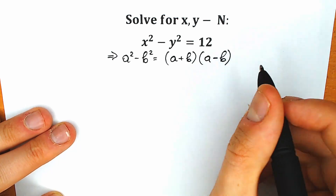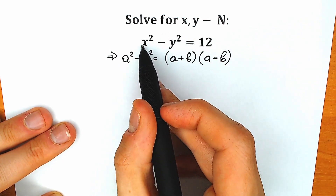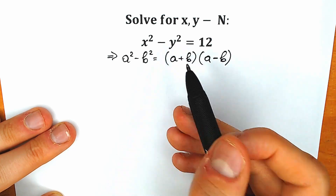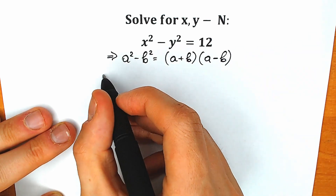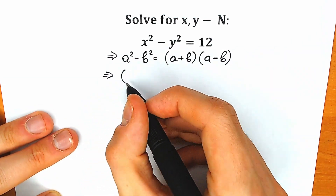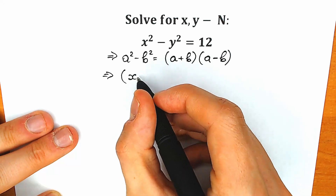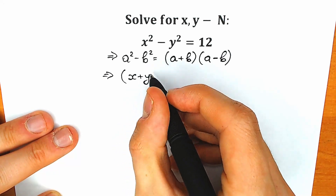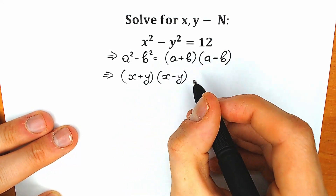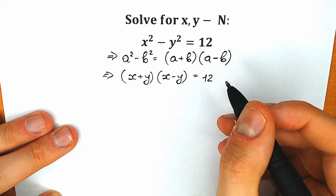Right now let's write this one in terms of that formula. We can easily write x squared minus y squared as x plus y times x minus y, equal to 12.